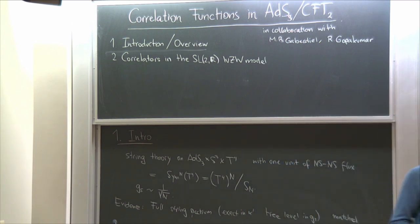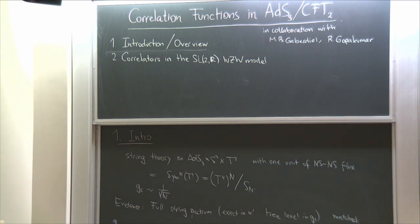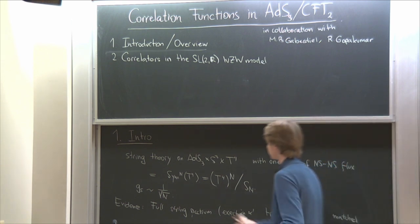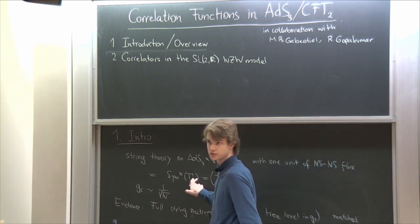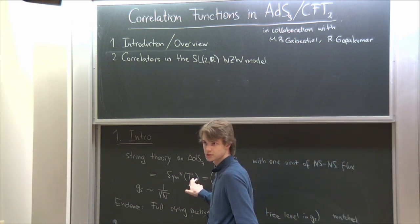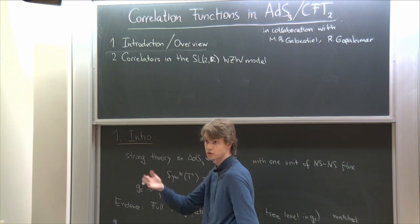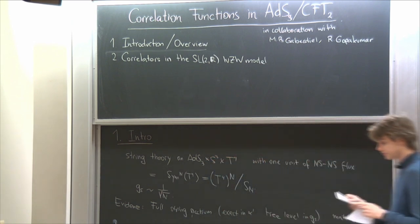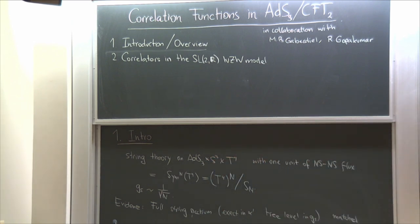One more question: is there just one marginal operator, or are there many more? There are four. In principle there are like 16 trivial ones which just deform the shape of the torus, and then there are four more coming from the twisted sector. So that's what I mean by 'large moduli space'.